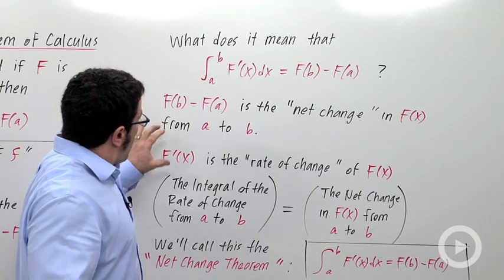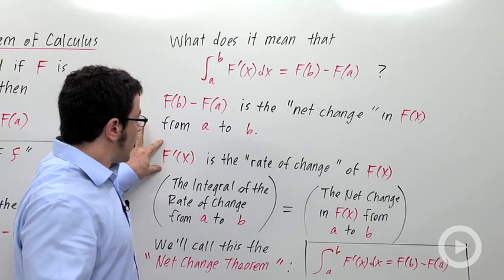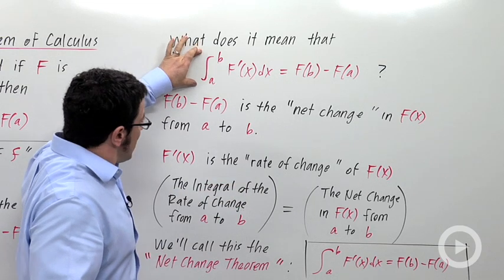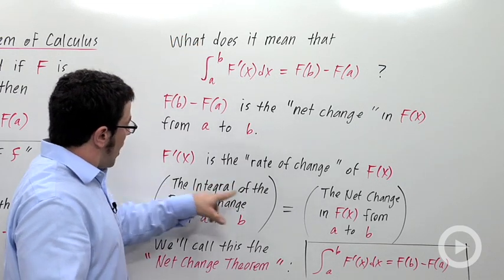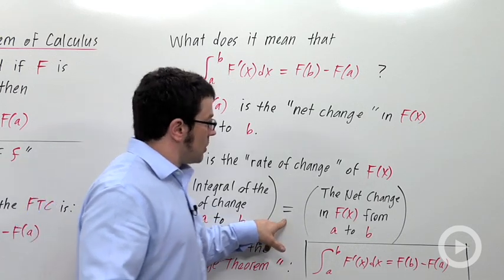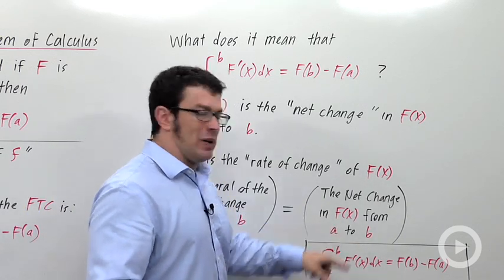Now, F prime of x is the rate of change of that quantity, the rate of change of F of x. So this theorem means the integral of the rate of change of F prime from a to b equals the net change in the function F from a to b.